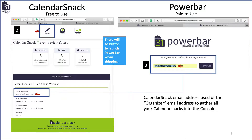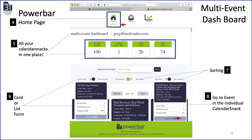Calendar Snack is free to use. PowerBar will be a paid product. When the product is completed, we'll have a button up here in the Calendar Snack interface that'll take you over to PowerBar. All you're going to need to do is put in whatever email address you're using with Calendar Snack, hit the power up button, and you'll be generated into this interface here — the PowerBar home page.